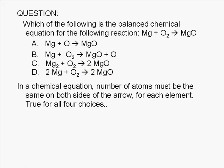In a chemical equation, the number of atoms must be the same on both sides of the arrow for each element. This is true for all four choices given here. However, only one of the four choices is properly balanced.